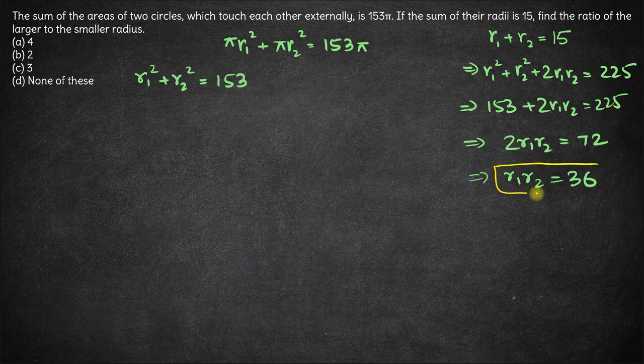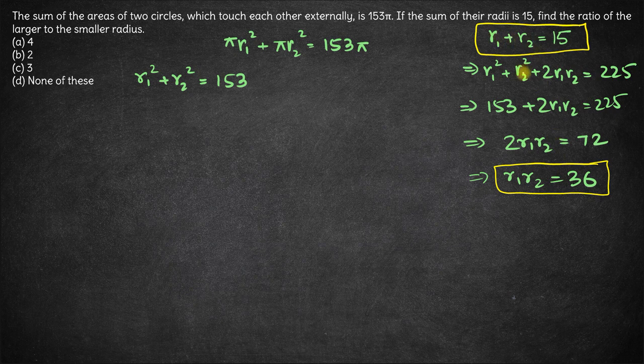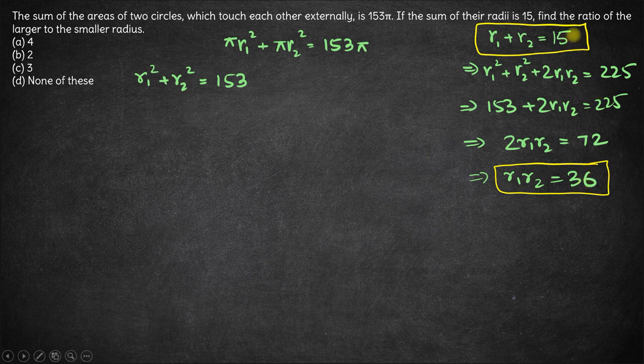We have these two equations: the product of two numbers r1 and r2 is 36, and sum of the two radii is 15. Now, if you are good with calculations, you can easily figure out that the value of r1 and r2 will be 12 and 3, right? 12 into 3 is 36 and 12 plus 3 is 15.